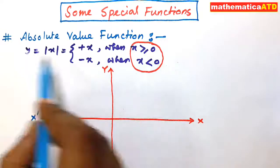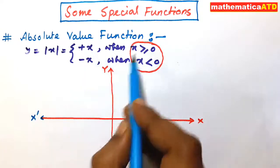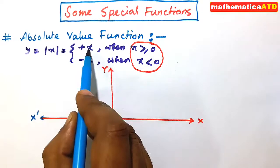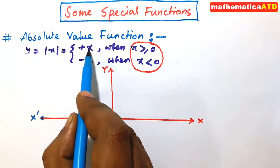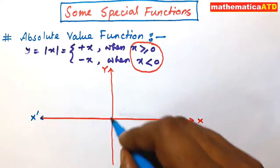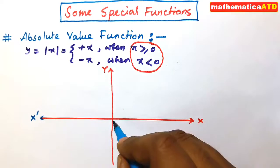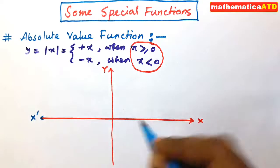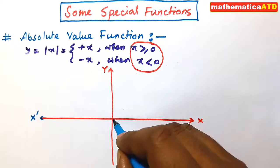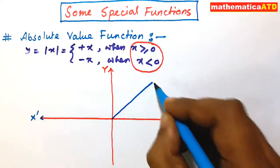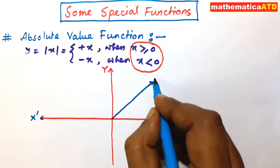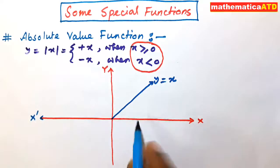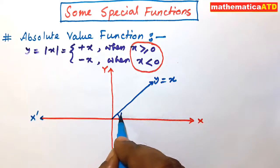y = x only for x ≥ 0. What is the slope of this straight line? This is 45 degrees. So you have to make a straight line starting from the origin making 45 degrees with the positive direction of x-axis. This is y = +x, only for x ≥ 0, at an angle of 45 degrees.